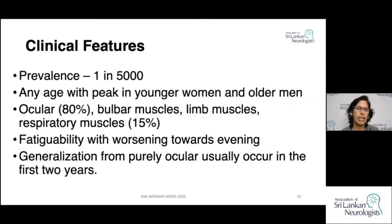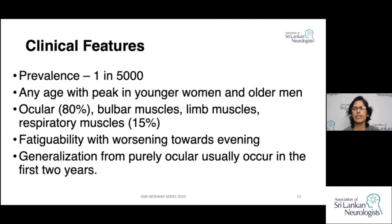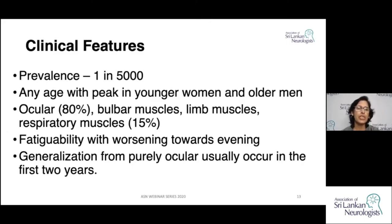Regarding clinical features: there are two peaks. In young people it is predominantly female, and in the elderly after 60, it is predominantly seen in males. In 80% of patients they develop ocular manifestations — they could present either with double vision, ptosis, or difficulty in closing eyes.